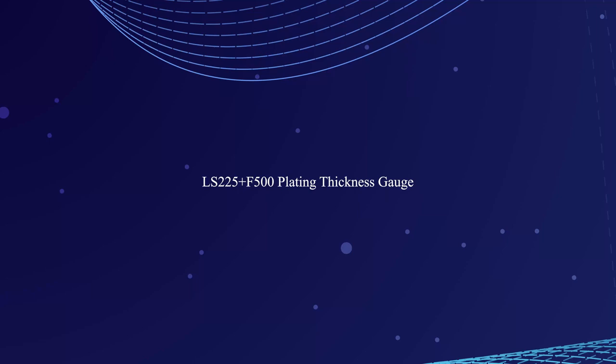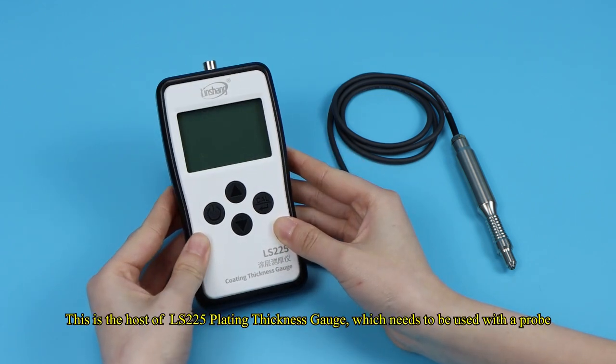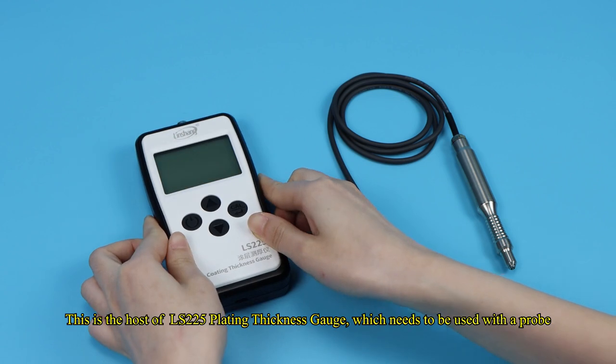LS-225 plus F-500 plating thickness gauge. This is the host of LS-225 plating thickness gauge, which needs to be used with a probe.